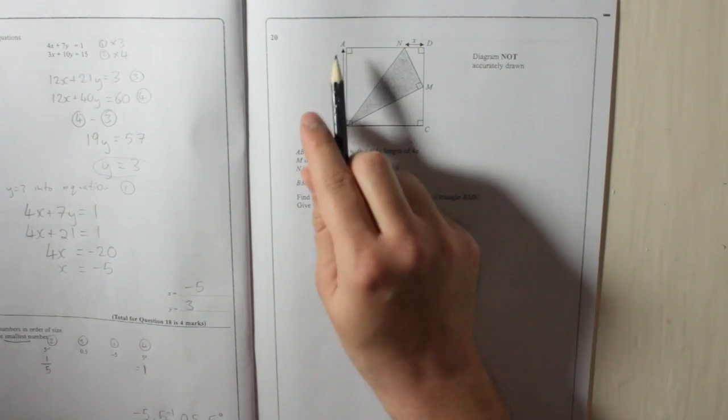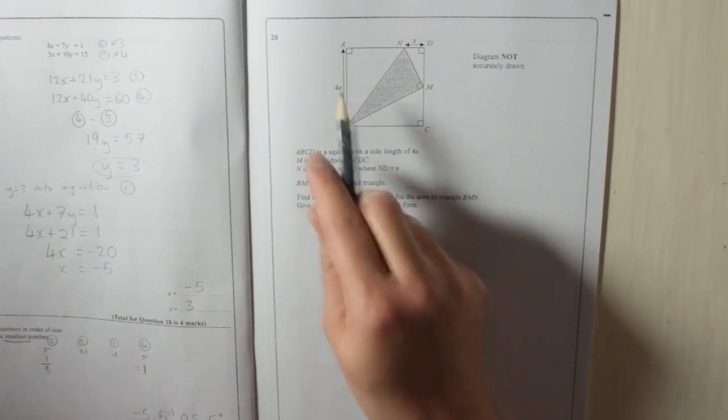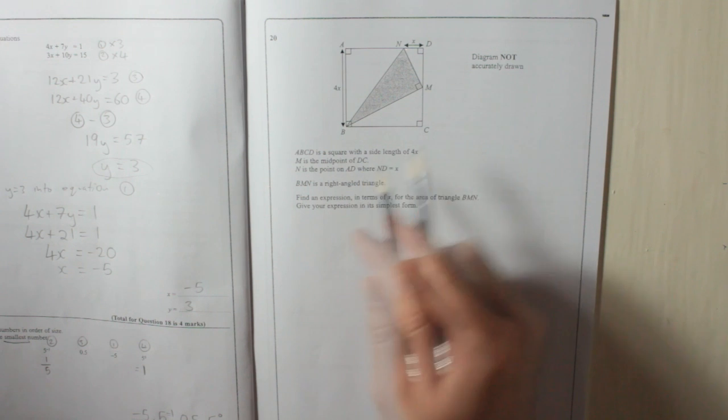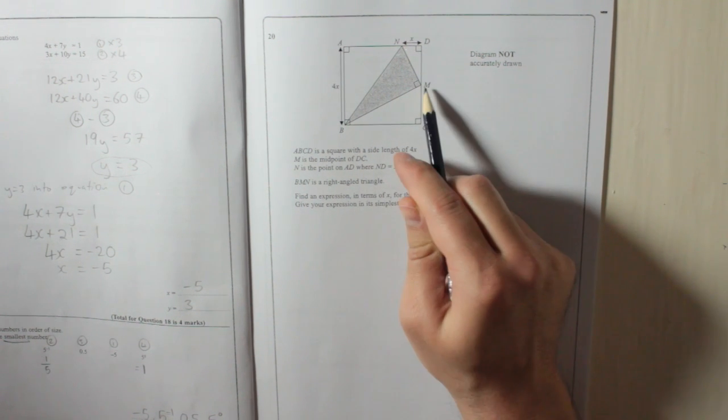ABCD is a square with a side length of 4x. M is the midpoint of DC. There's D to C, DC, so M's the midpoint.